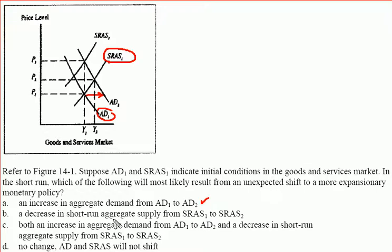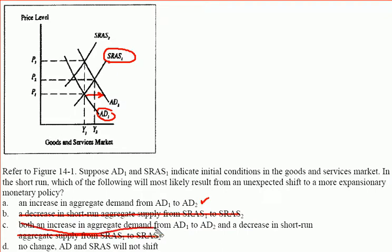B says a decrease in short-run aggregate supply from SRAS1 to SRAS2. It's not clear why that would happen at all. If it's an expansionary monetary policy, there isn't any reason to believe this is going to cause a run-up in resource prices, which is something that would cause just such an effect. So we can safely cross that from the list. C says both an increase in aggregate demand from AD1 to AD2 and a decrease in short-run aggregate supply from SRAS1 to SRAS2. But we've already eliminated that as a possibility, so C is out as well.